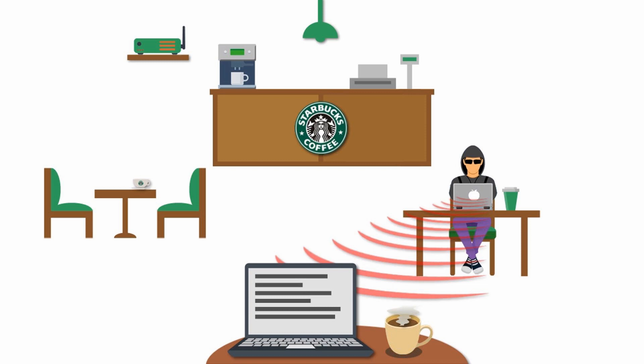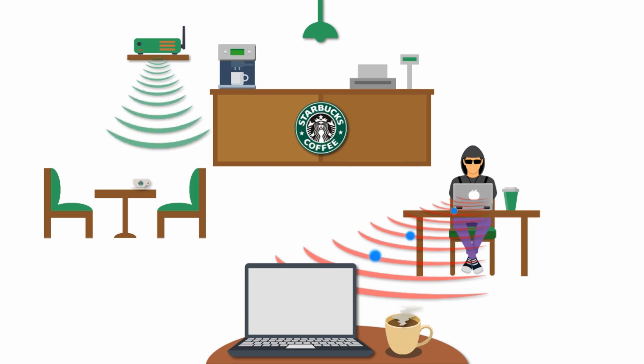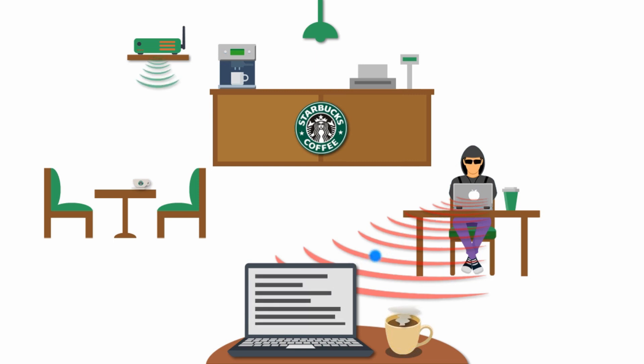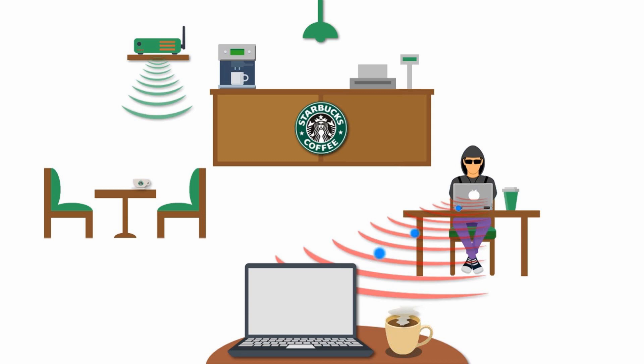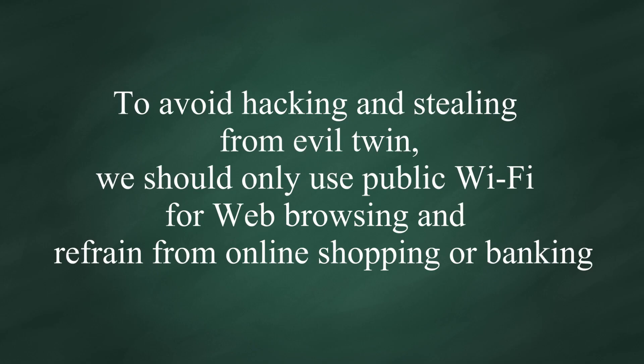In this example, the Evil Twin hotspot will pose as Starbucks free Wi-Fi. The Evil Twin can be configured to pass the internet traffic through the legitimate access point while monitoring the victim. The Evil Twin can also be a hotspot through which victims go to the internet. Either way, the victim's traffic would be monitored and recorded by the Evil Twin.